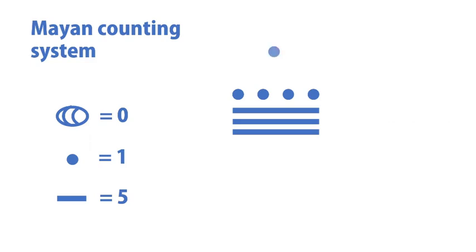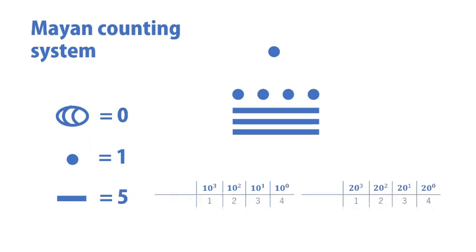This means that instead of the 10s, 100s, and 1000s places like we have in base 10, Mayans use the 20s place, the 400s place, and the 8000s place. So while 1, 2, 3, 4 might be 1234 in base 10, in base 20 it's actually equal to 8,864.